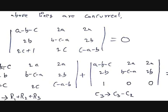So you get the determinant of [a-b-c, 2a, 2a; 2b, b-c-a, 2b; 2c, 2c, c-a-b] plus the determinant of [a-b-c, 2a, 2a; 2b, b-c-a, 2b; 1, 0, 0] equals zero. The sum of these two determinants should be zero. Now let's apply row and column operations.